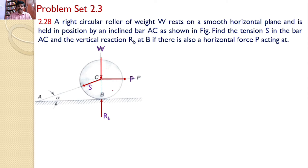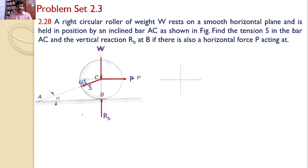In order to analyze this problem, let us transfer all those forces onto the XY plane. The string AC makes an angle alpha with the horizontal, meaning the force S makes an angle alpha with the horizontal. There are four forces acting on the system. But in order to apply the sine rule, the number of forces must be limited to three. Let us see how we can reduce these four forces into three.